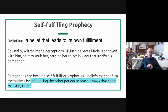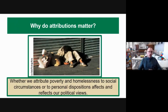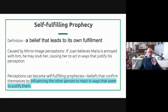There's this thing called the self-fulfilling prophecy. It is a belief that leads to its own fulfillment. I have a belief about someone else, and that belief - because I give off characteristics that make them live up or down to that belief - actually changes their behavior. It's caused by mirror image perceptions: if Juan believes that Maria is annoyed with him, he may snub her, causing her to act in a way that justifies his perception, making her more cold toward him.